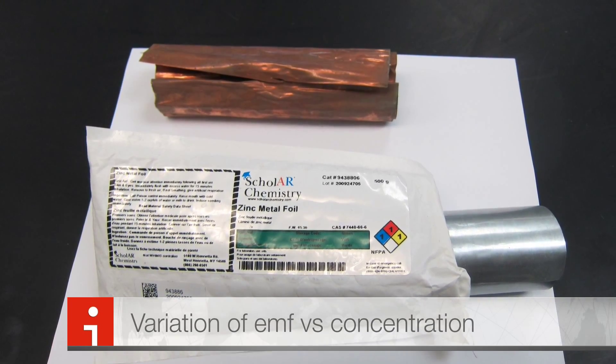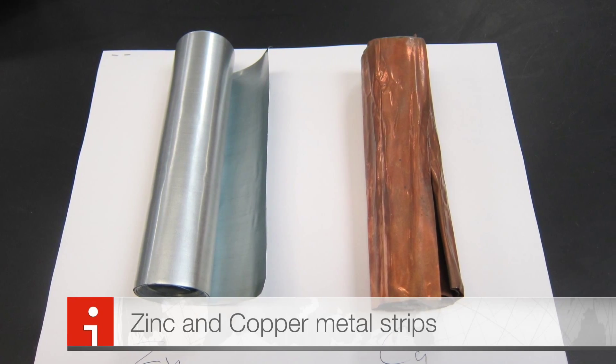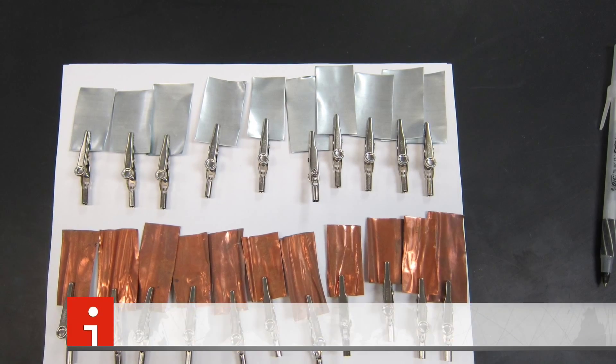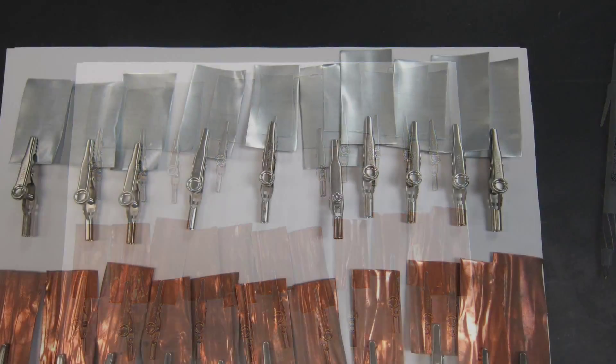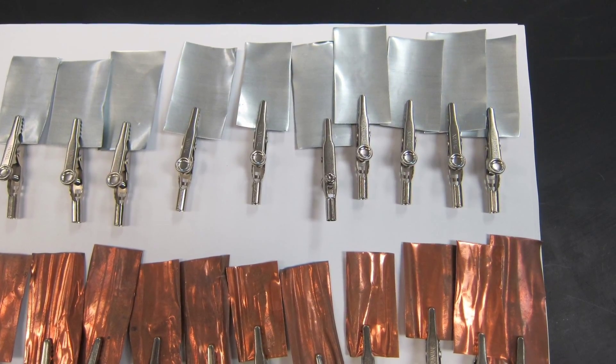The materials that you require for it are copper metal and zinc metal in thin sheets. Cut them into small sizes of 3 by 2 cm and connect them to crocodile clips.